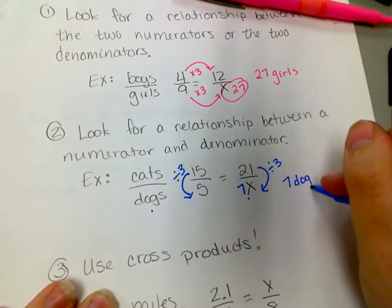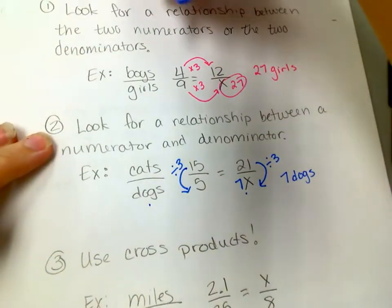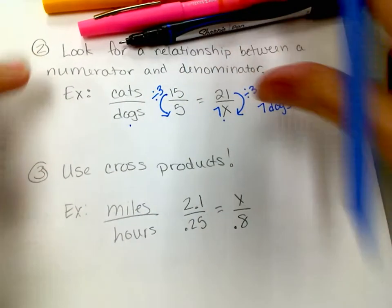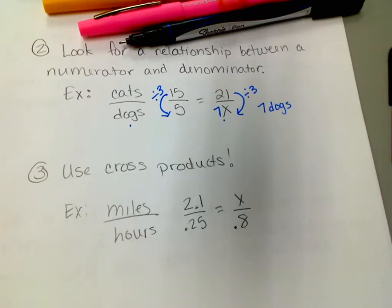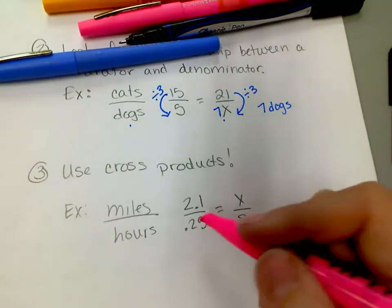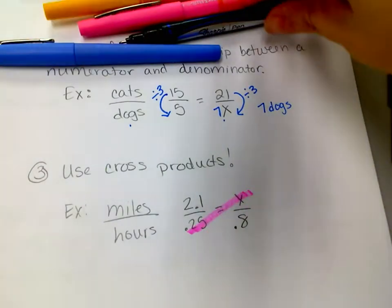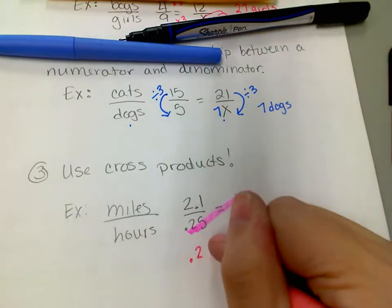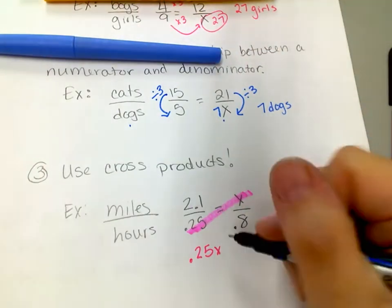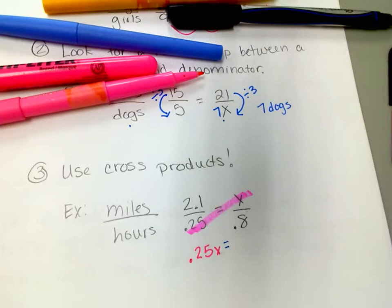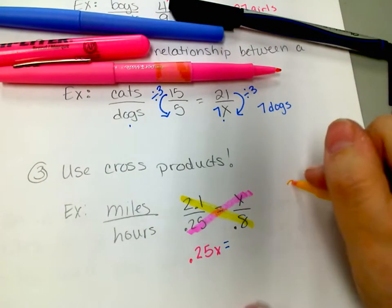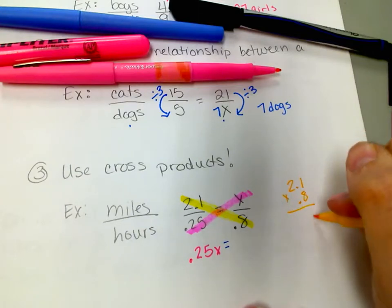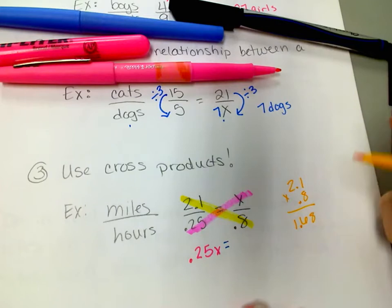Okay, the other one that's new to us is using cross products. It's because there's an equal sign here, these across from each other have to be equal to each other. So what I mean is if I multiplied these across, 2.25 times x is 0.25x—that has to be equal to the cross product of this 2.1 times 0.8. So 2.1 times 0.8, and there's two decimal places, is 1.68.